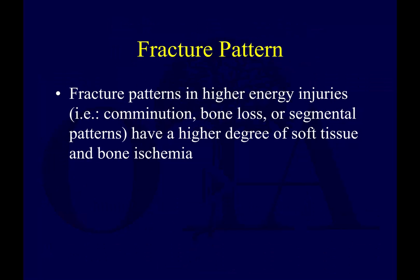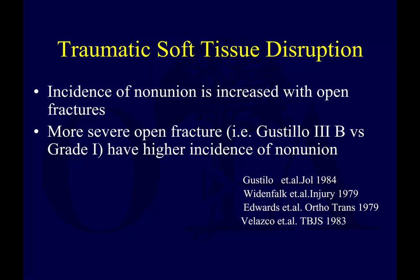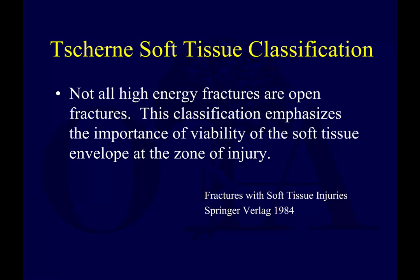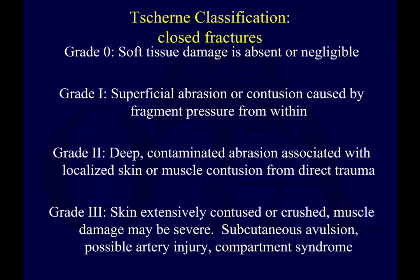Higher energy injuries combine bone loss, soft tissue injury, and bone ischemia. With open fractures, which we see frequently in the tibia, more severe open fractures have a higher incidence of non-union, shown in many older studies. The Tscherne classification helps emphasize the importance of viability of the soft tissue envelope at the zone of injury — it starts at zero and goes to grade three, where you're essentially dealing with a compartment syndrome.